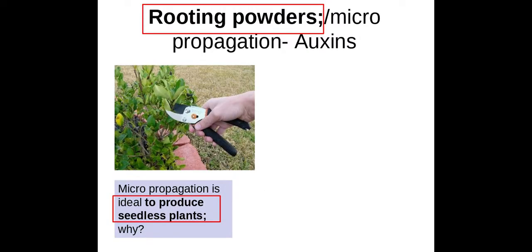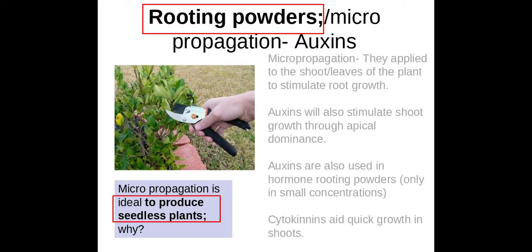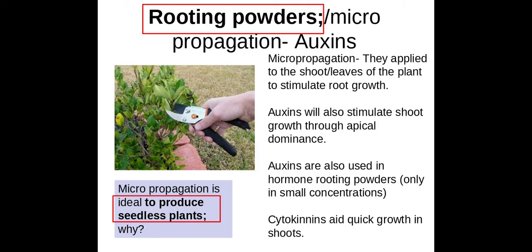Next is rooting powders. We use these in micropropagation, which you learn about in cloning. Auxins can stimulate shoot growth through apical dominance, and in small concentrations they can also be really good for rooting powders to stimulate root growth.